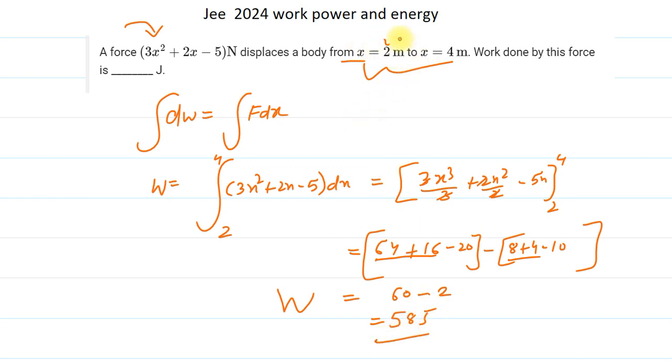Since all the values are in meters, the answer is in joules. So 58 joules is the amount of work done to displace the body from 2 meters to 4 meters.